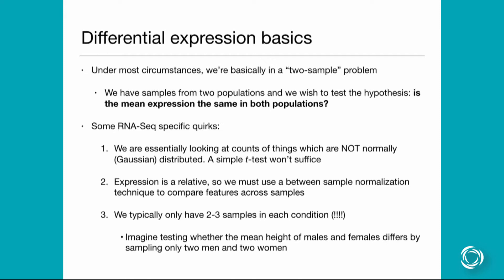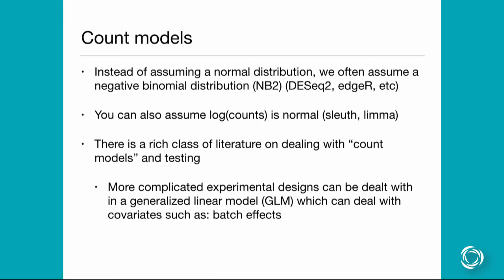For differential expression you need many more samples, so you have to have ways to deal with all of this. To attack the first problem, we deviate from the classical model of assuming normally distributed populations and instead assume a negative binomial model. There are several different parameterizations, but the one you're really looking for in the RNA-seq context is the negative binomial count model, often called the NB2 model. This is the model assumed in DESeq2, edgeR, and a whole host of other tools.